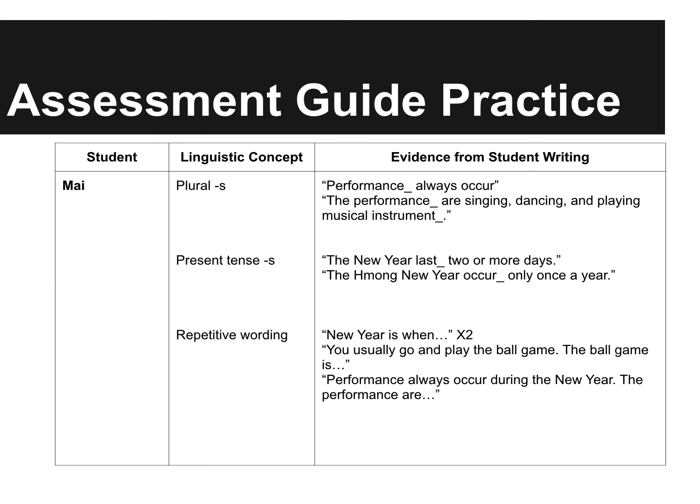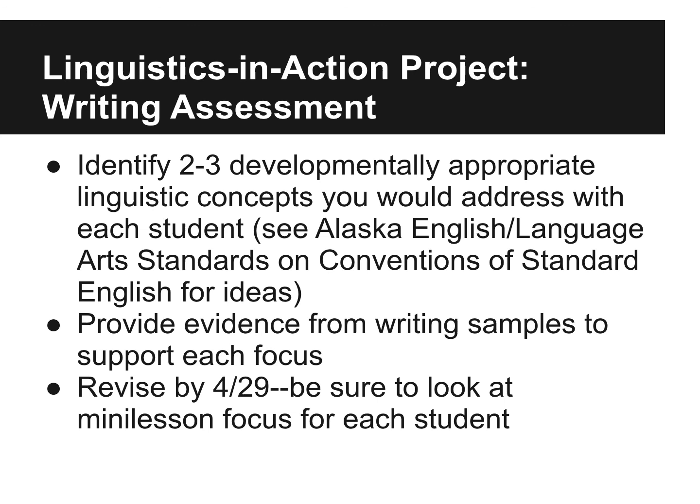After assessing Mai, I would assess all of the other students in my class, too. This would help me choose appropriate mini-lesson topics and group students who would benefit the most from my instruction. Now it's your turn. You should have picked one grade level from the paper sets for your Linguistics in Action project. You'll need to identify two to three developmentally appropriate linguistic concepts you would address with each student and provide evidence from the writing samples to support each focus. Once you have picked a mini-lesson topic and we've discussed it, you'll need to revisit all of the papers in your set to decide which students would benefit the most from instruction on that concept.